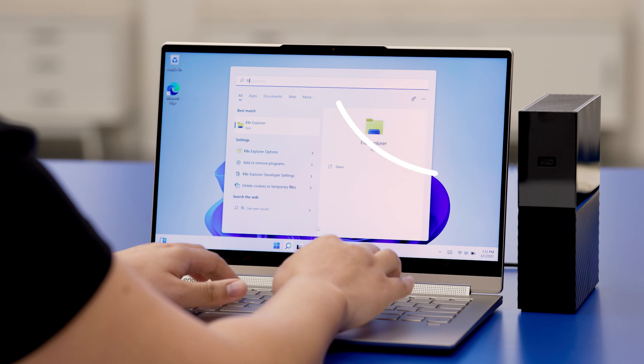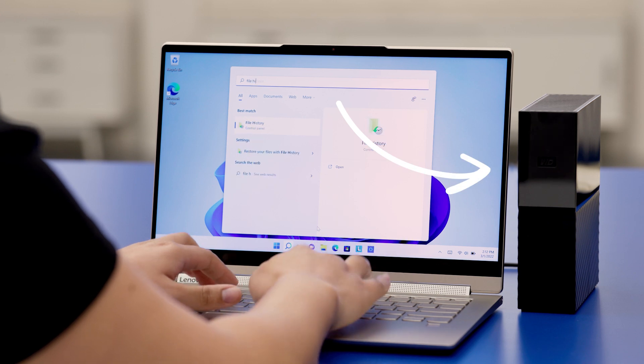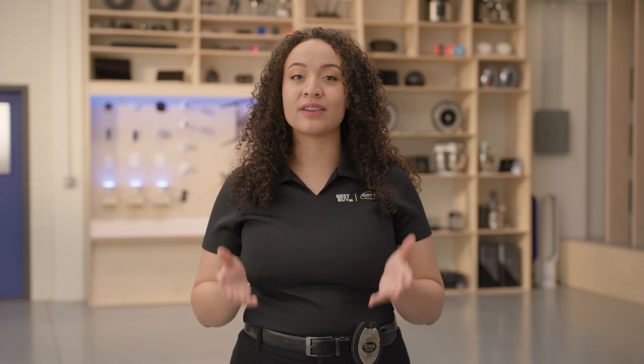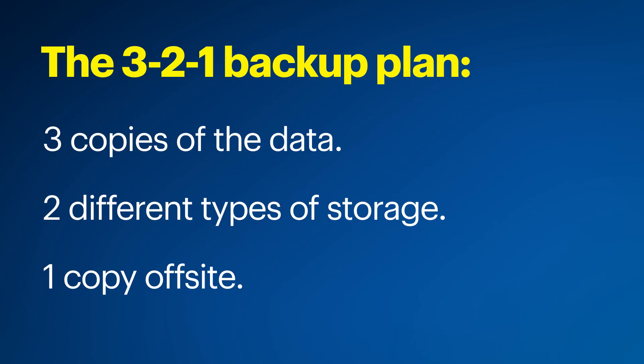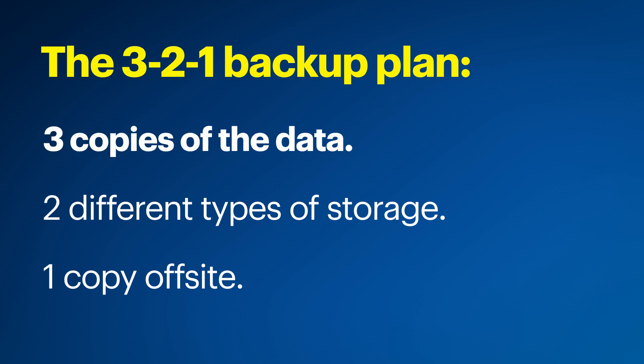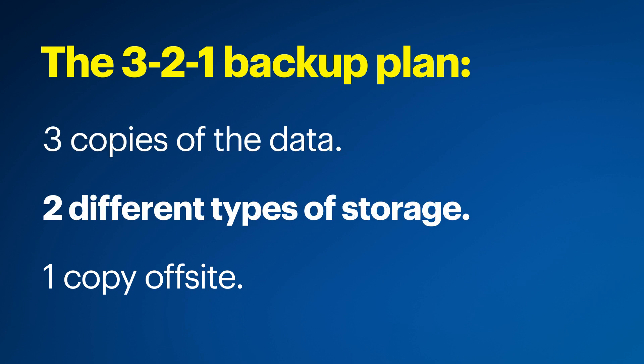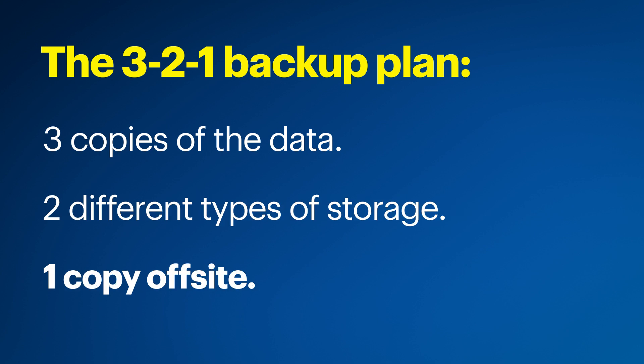Backing up your files to an external drive like the one I'm using here allows you to have a copy of your important files. This can be very useful if something happens to your files and you need to recover something important. Backing up to a physical drive is also an essential step in a 3-2-1 backup plan. The 3-2-1 backup plan allows you to have three copies of your data and store the copies on at least two different types of storage. One of the copies would also need to be stored off-site.